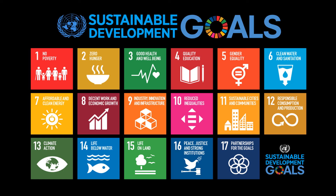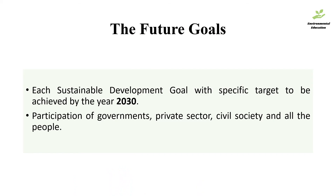These are the goals that every country, every government, and every individual has to meet by the year 2030. Each sustainable development goal has to be met with a specific target, and the participation of governments, the private sector, civil society, and all people is necessary for these goals to be achieved by 2030.